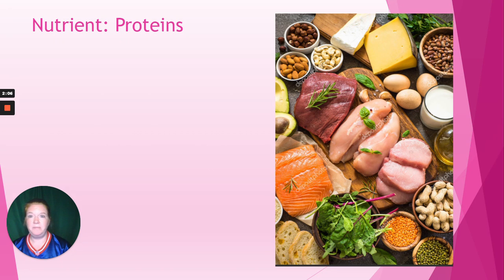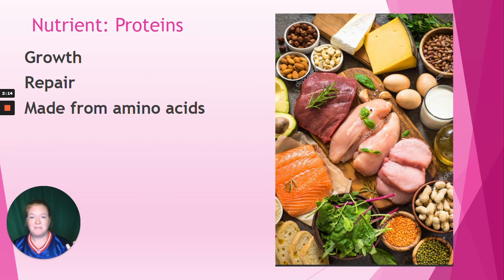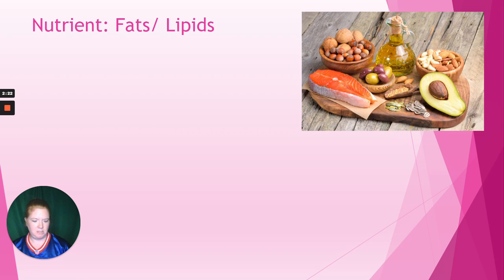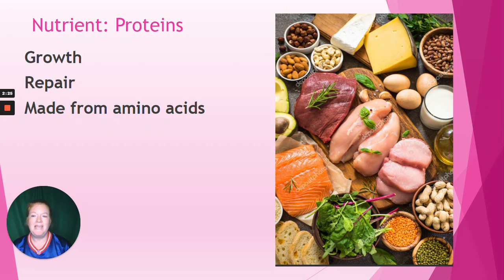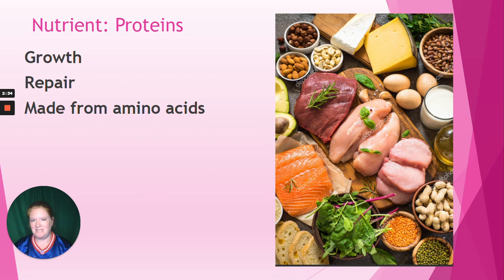The next category is proteins. Proteins are responsible for growth and repair, among many other things inside our body — they really are a vital nutrient. Proteins are made from amino acids. Things that provide protein are meats — chicken, beef, veal, fish — but also nuts and seeds, eggs, and dairy. You can get protein from plenty of sources aside from animals.